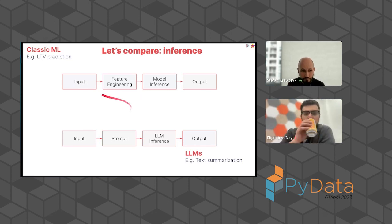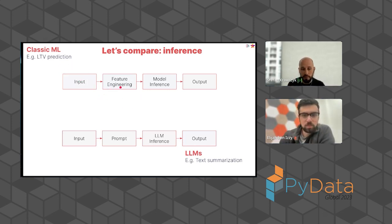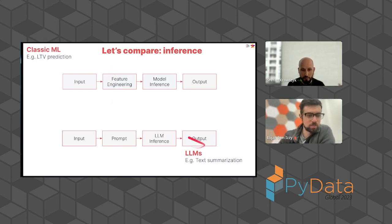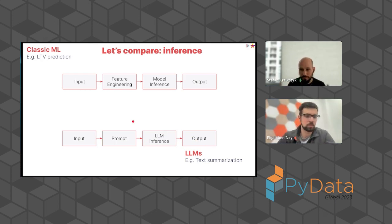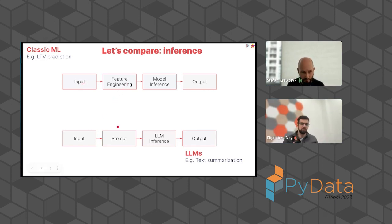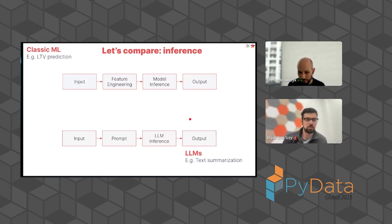First, let's start with inference. Say we have an LTV — we're trying to do long-term value prediction, which is a classic ML case — and say we're doing some text summarization. To do inference from a pipeline, a lot of things you need to do are pretty similar. You need some inputs; in one you do feature engineering, the other you pass things into a prompt, you then pass it to a model, and then you get some output. Looks pretty similar. One thing to note though is there really isn't any feature engineering, so to speak, with LLMs. Instead you have a prompt that you fill in with some sort of context.